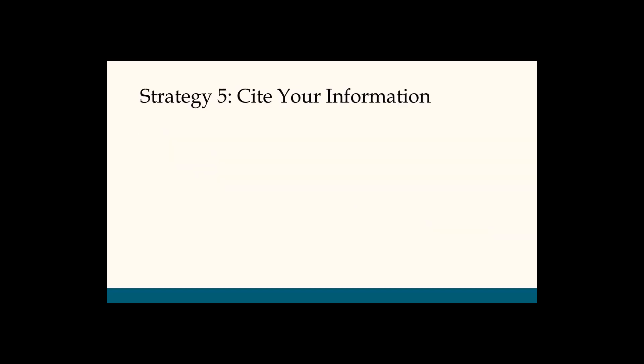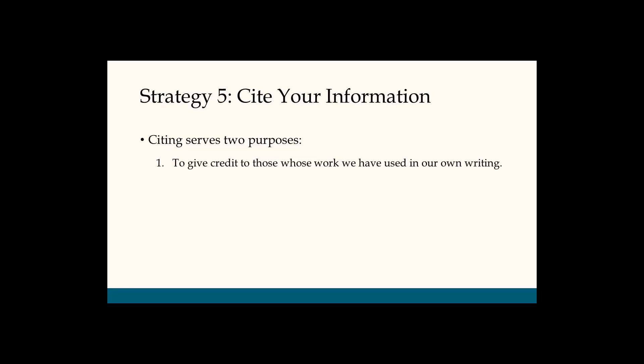Strategy five: cite your information. In writing, citation serves two purposes. The first is to give credit to those whose works we have used in our own writing. The second is to tell your reader where you got your information so if they want to look further into the topic, they know where to find it. For these reasons, citation is the only surefire way to avoid plagiarism. It tells your readers where you got your information and where they can get it too.